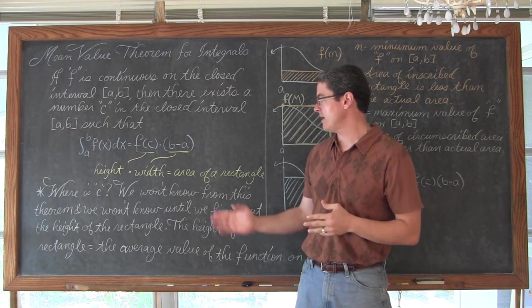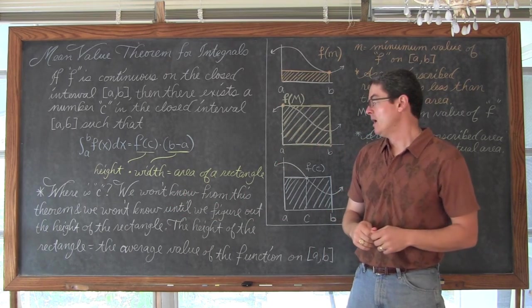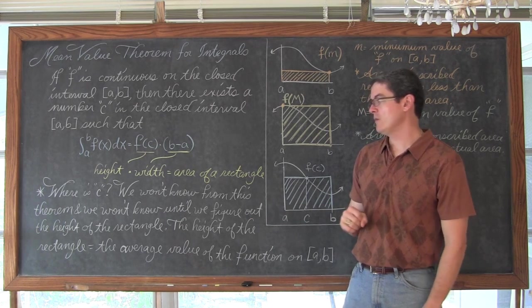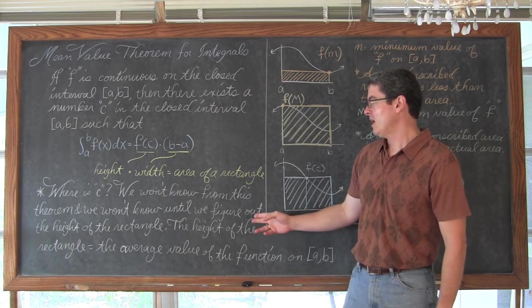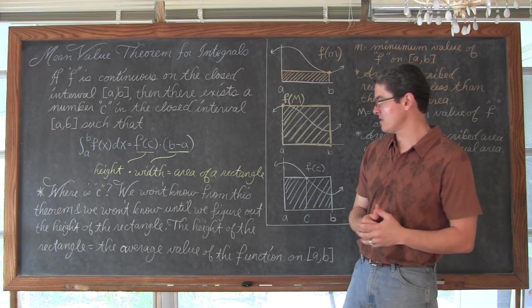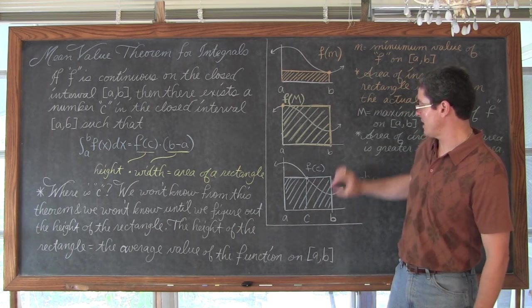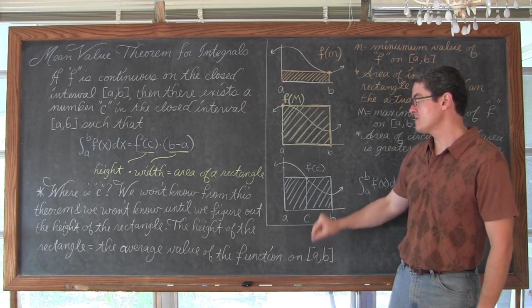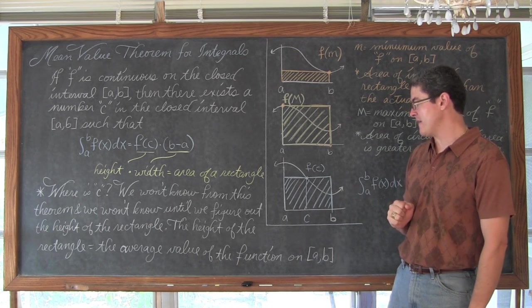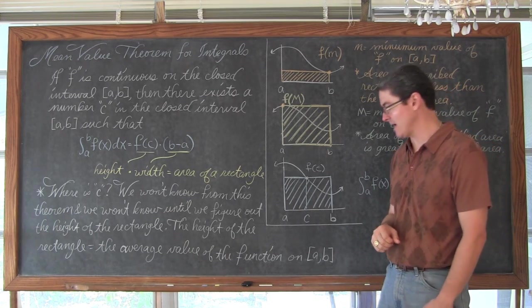It does not tell us where that value of c is. So we are not going to know from this theorem, and we won't know until we finish the second theorem, the height of that rectangle if you need that for your particular problem. The height of the rectangle, this one here, this blue one, is going to be equal to the average value of the function on ab. And that is going to be the next theorem that we take a look at.